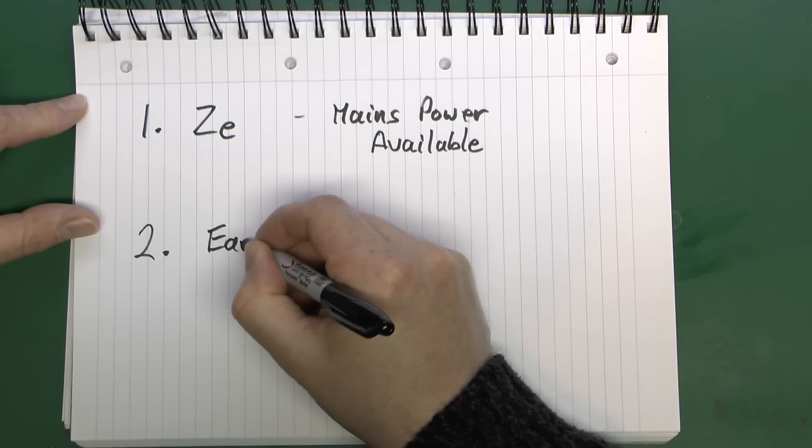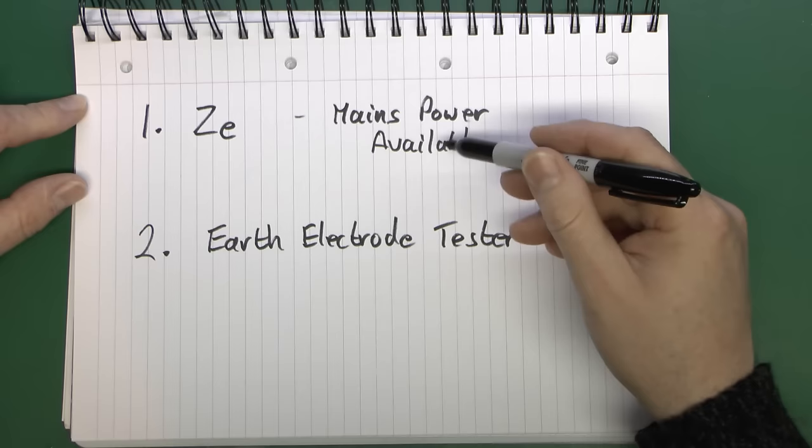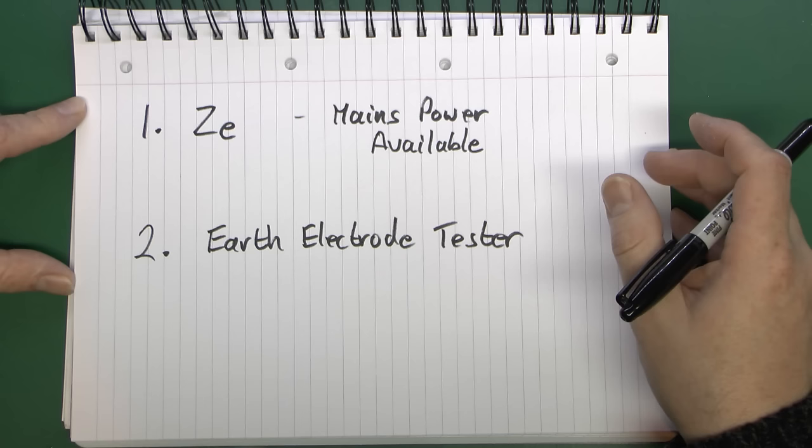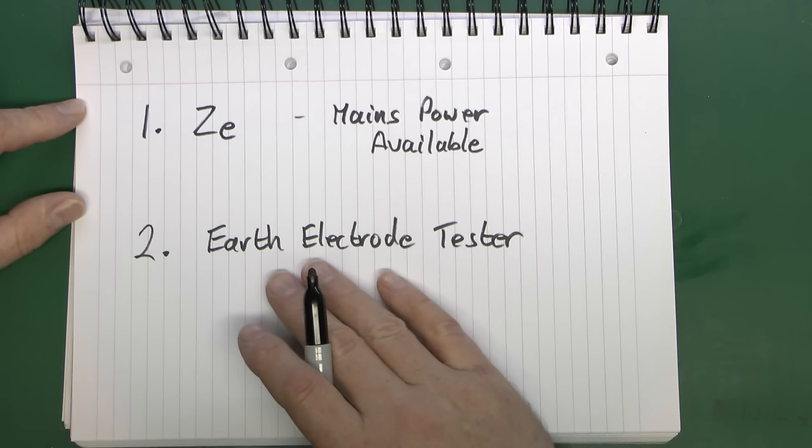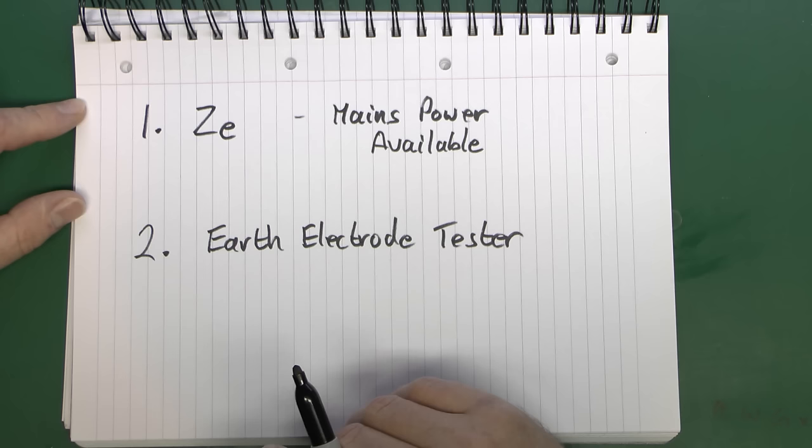then the alternative method is to use an actual earth electrode tester and this does not require any mains power. They're battery operated and this can be done whether there's mains power available or not. Certainly if you've just installed an earth rod and the electricity hasn't been connected yet, then this is pretty much the only choice you're going to have.